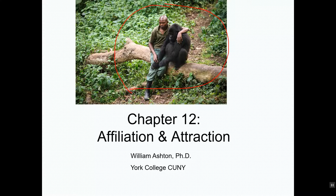In case you don't know the story behind this, this guy here is a worker in a refuge for gorillas, and this is a juvenile or teenage gorilla whose mother was just killed by poachers. The gorilla, as you can tell, is very sad and he's being comforted by a friend. This illustrates the universality of the need for affiliation in hominids — humans, gorillas, chimpanzees — but also the humanity of gorillas.